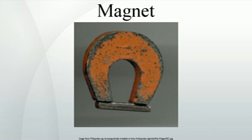Electric guitars use magnetic pickups to transduce the vibration of guitar strings into electric current that can then be amplified. This is different from the principle behind the speaker and dynamic microphone because the vibrations are sensed directly by the magnet, and a diaphragm is not employed. The Hammond organ used a similar principle, with rotating tone wheels instead of strings.